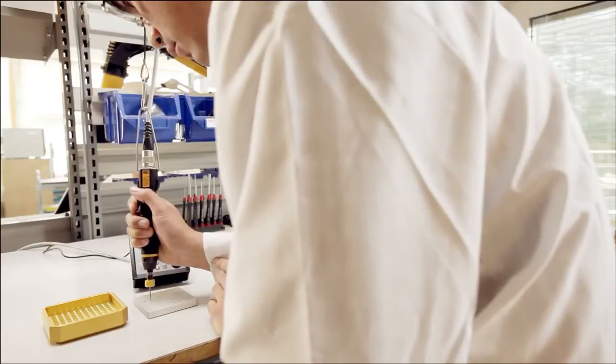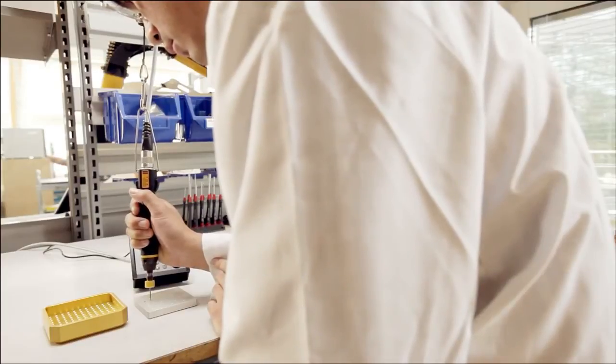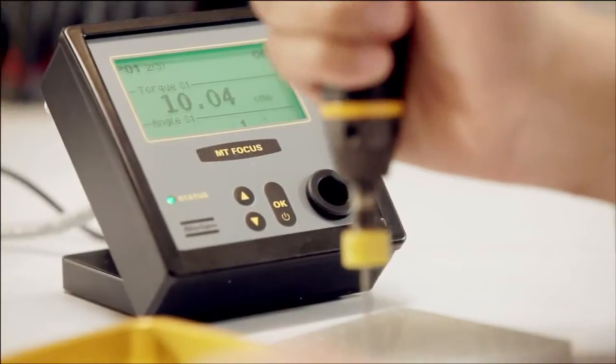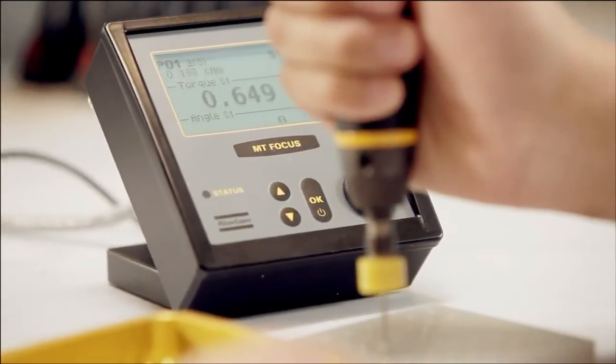The controller comes in two versions: Basic, where you can program one P-set, and Advanced, with three P-sets. Batch count is available on both versions.